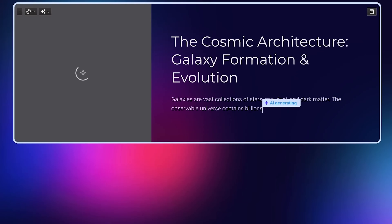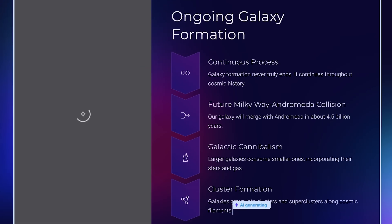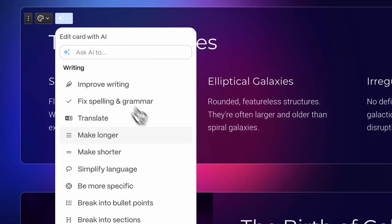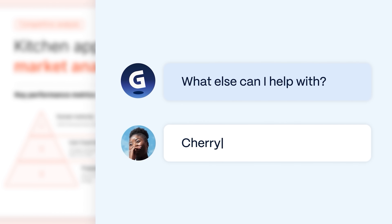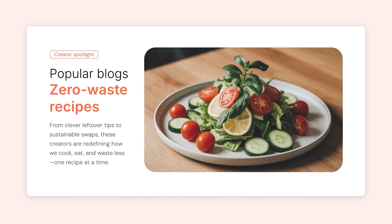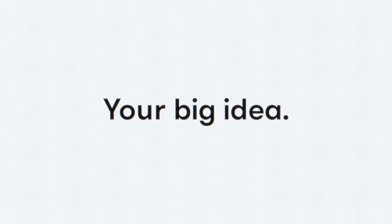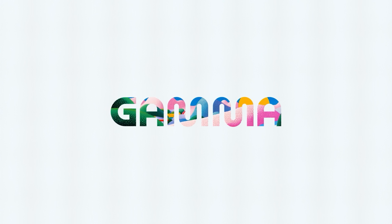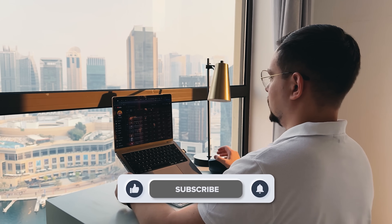What I love about Gamma is that it doesn't just save you time — it makes the whole creative process more enjoyable. You stop fighting the tools and start focusing on what matters: the message, the story, and the pitch. So if you're still formatting slides manually, this is your sign to stop. This thing is faster, cleaner, and honestly way more fun to use, and the fact that it handles everything in one place is rare. Check it out — the link is in the description. Let me know what you build with it. If you found this video helpful, feel free to like or subscribe for more content like this. Thanks for watching and see you next time.